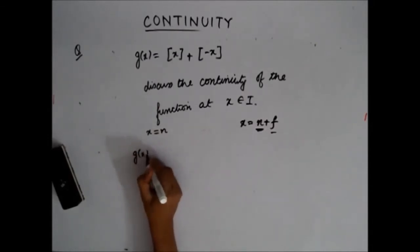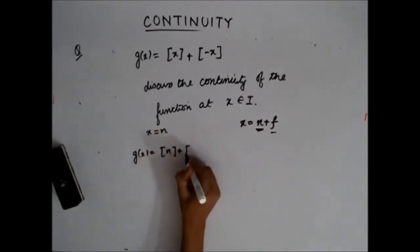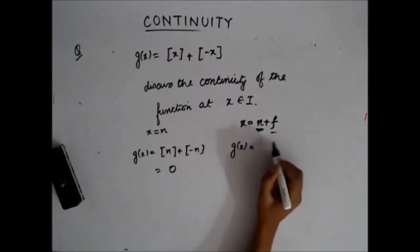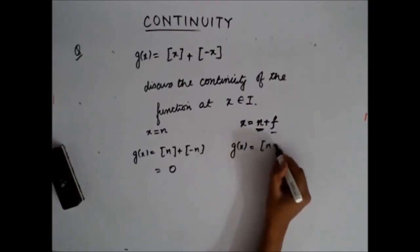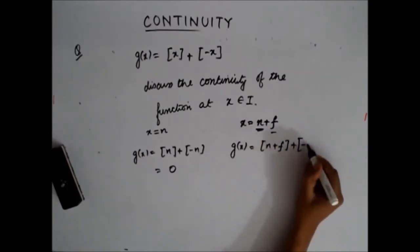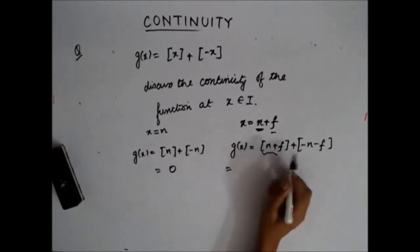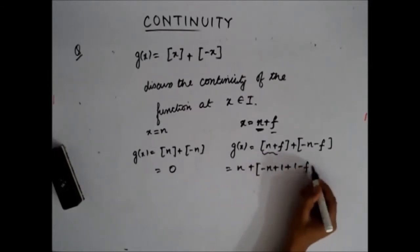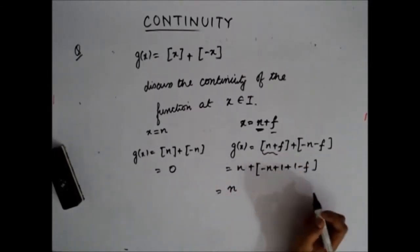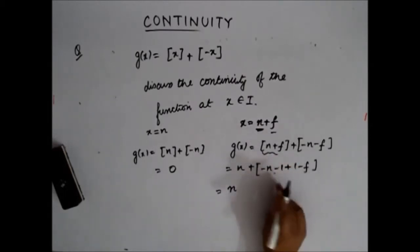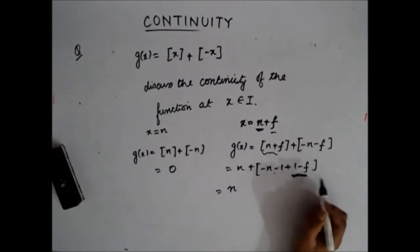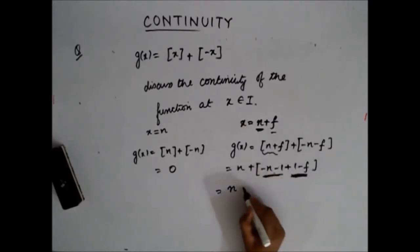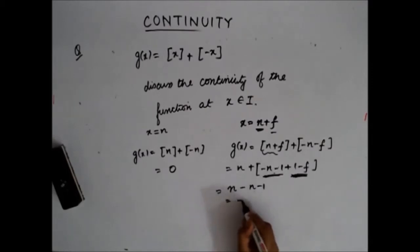When x is an integer, g(x) becomes 0. When x is not an integer, x becomes n plus f. The floor of (n + f) is n, and I can write x as minus n plus 1 plus 1 minus f. Obviously, this value lies between 0 and 1. So the floor of an integer plus something between 0 and 1 is the integer itself, and this becomes minus 1.